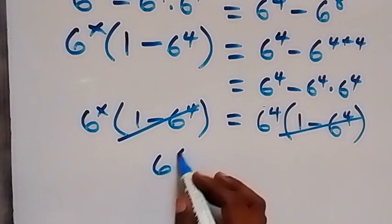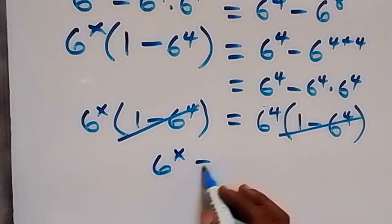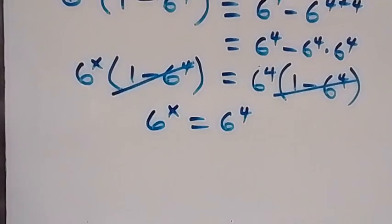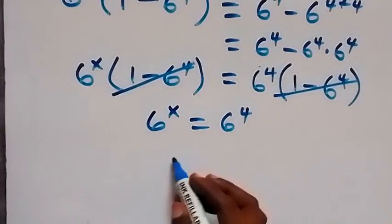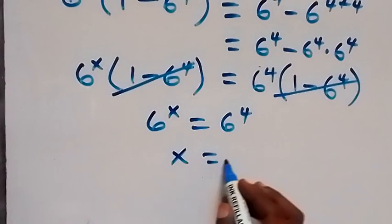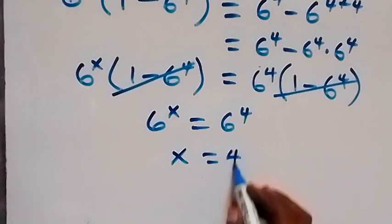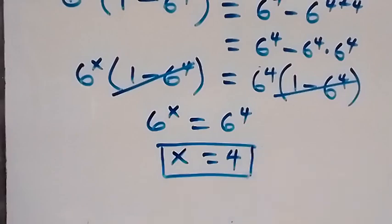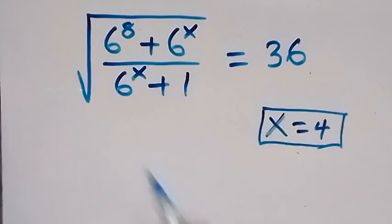We have 6 raised to power x equals 6 raised to power 4. Since the bases are equal, we can say that x equals 4. Now let's check using what we were given: the square root of 6 raised to power 8 plus 6 raised to power x, over 6 raised to power x plus 1.